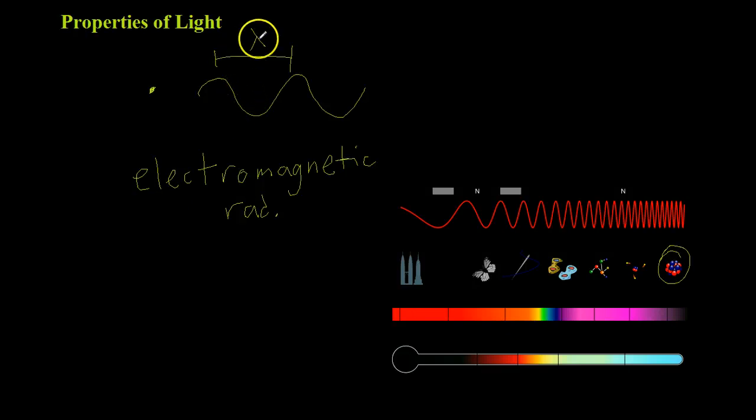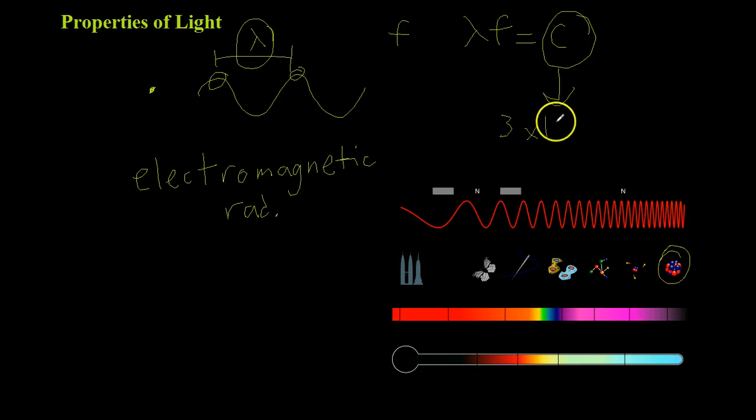There are two basic properties of waves. There is the wavelength, lambda, which is the distance between two crests or troughs in the wave, as well as the frequency. That is how many of these crests pass by every second. If you take these two numbers, lambda and frequency, and multiply them, you end up finding that it equals a constant, C. This C is the speed of light, which comes out to 3 times 10 to the 8th meters per second, approximately.